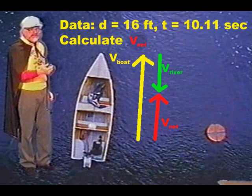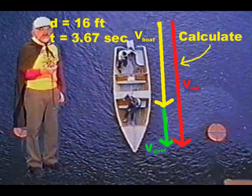To find the resultant velocity — the red vector — of the boat going upstream and the current going downstream, divide the distance traveled, 16 feet, by the time required, 10.11 seconds. To find the resultant velocity — the red vector — going downstream, divide 16 feet by the time, 3.67 seconds.